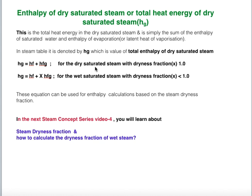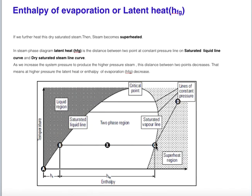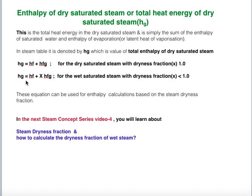For dry saturated steam with dryness fraction x = 1, HG = HF + HFG. For wet steam with dryness fraction x between 0 and 1 (the two-phase region between points B and C), the total enthalpy equation is: H = HF + x × HFG, where x is the dryness fraction. This equation can be used for enthalpy calculation based on the steam dryness fraction. The next steam concept series video will cover steam dryness fraction in more detail.